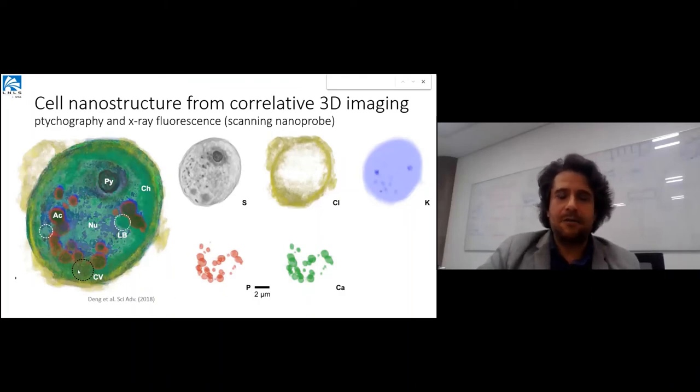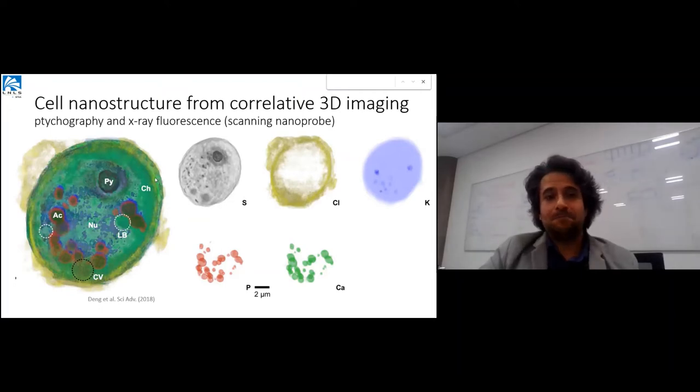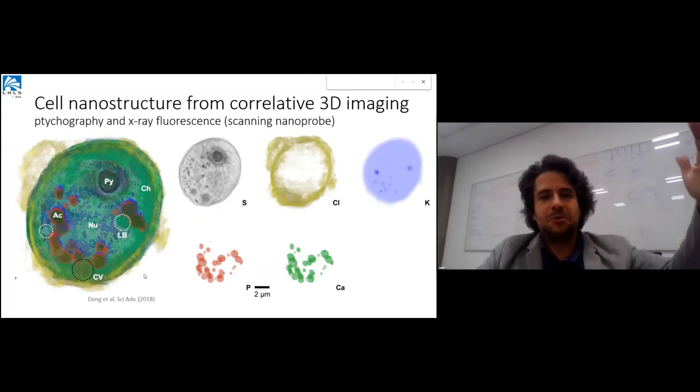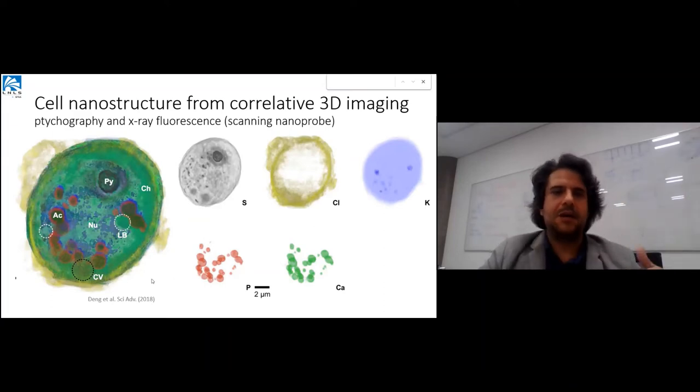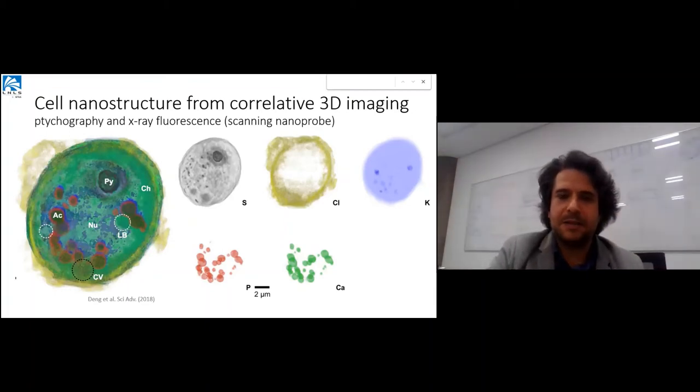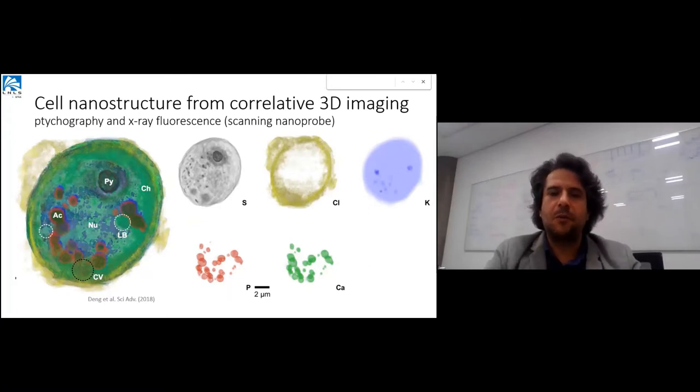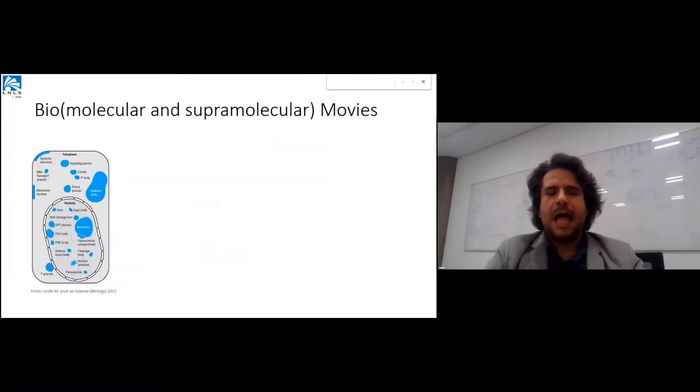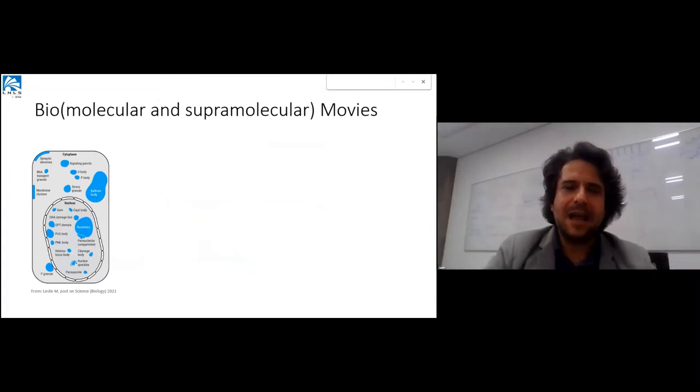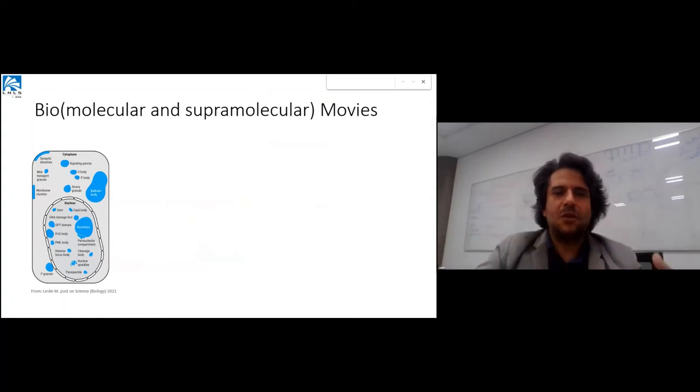These are results of a 3D cell structure done at APS from our colleagues - a very interesting result. This took several hours to be done. Until it becomes a user widespread technique for understanding 2D structure of cells, we'll need the higher coherent flux from fourth-generation synchrotrons. As soon as we understand this, the next step is: what is the dynamics built into these interactions?